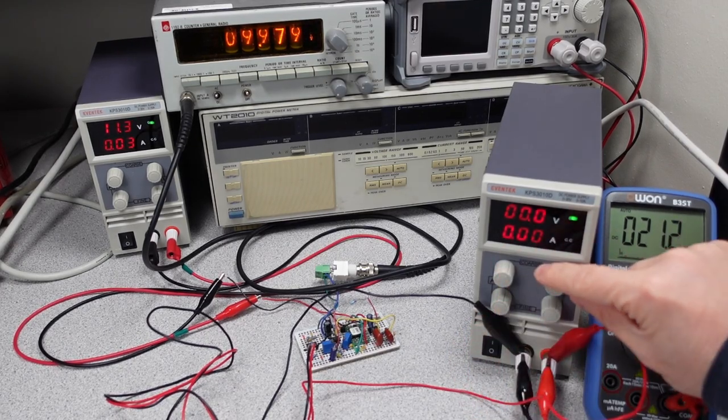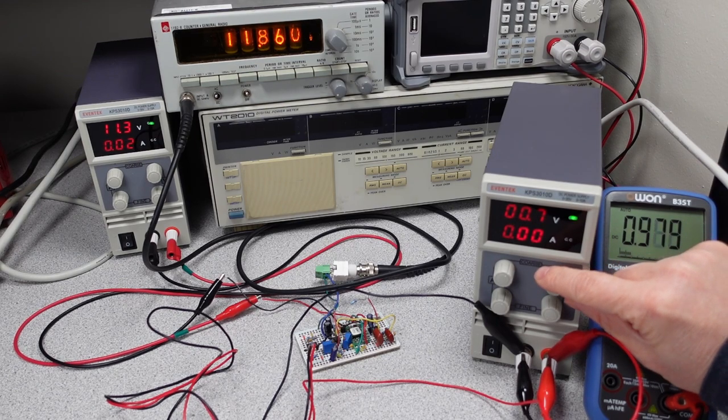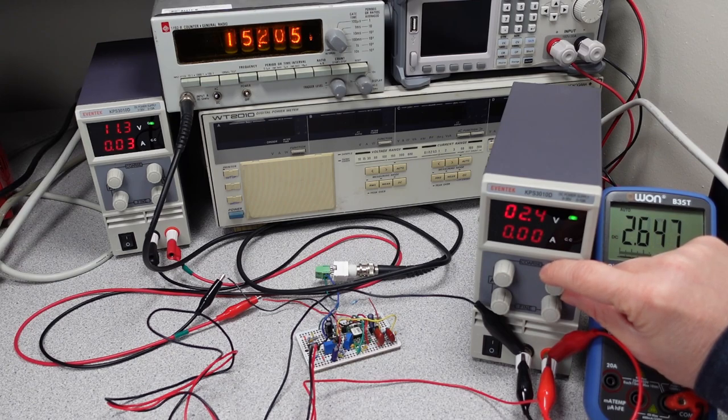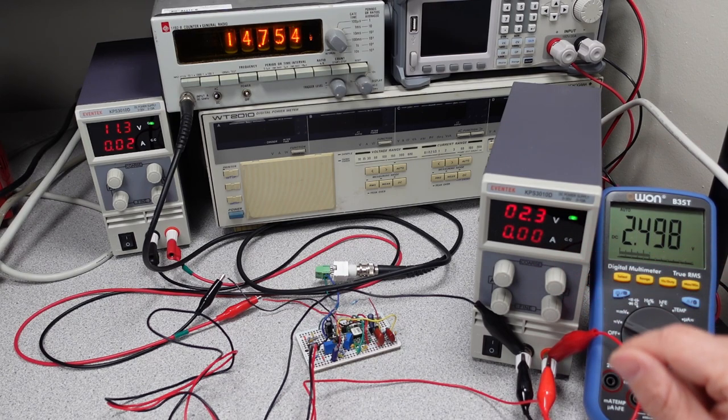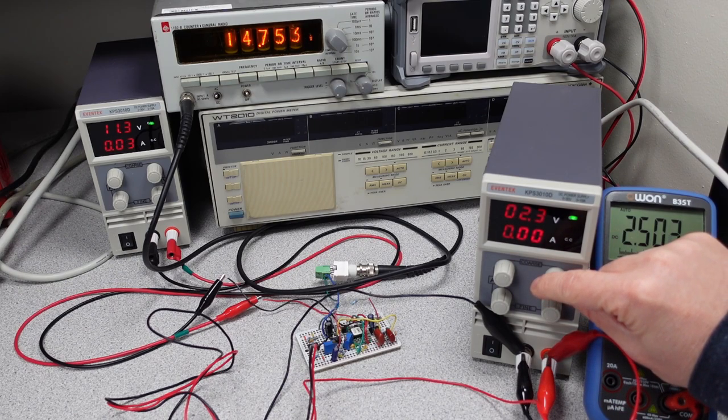Here is a demonstration of the circuit operating. First, we can see the circuit at 0V DC source voltage and the frequency sitting at 10kHz. As the source voltage is increased, the frequency increases, until getting to 5V DC where the circuit reaches its 20kHz rating.